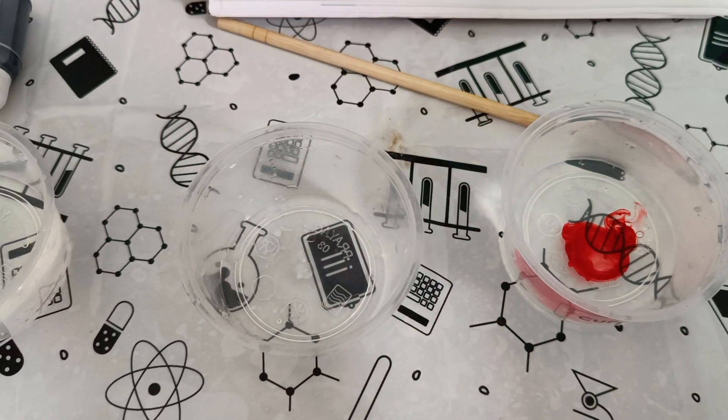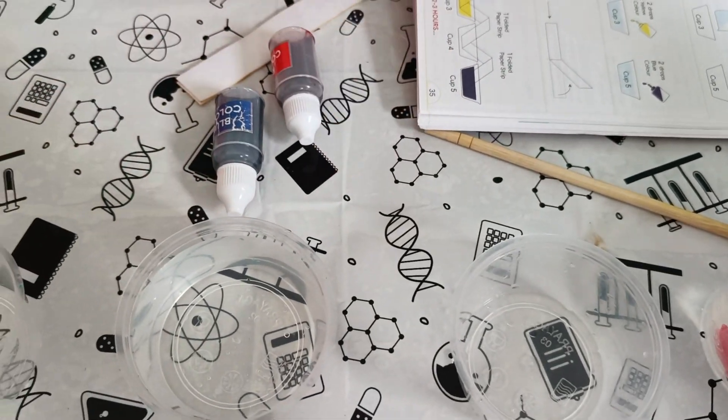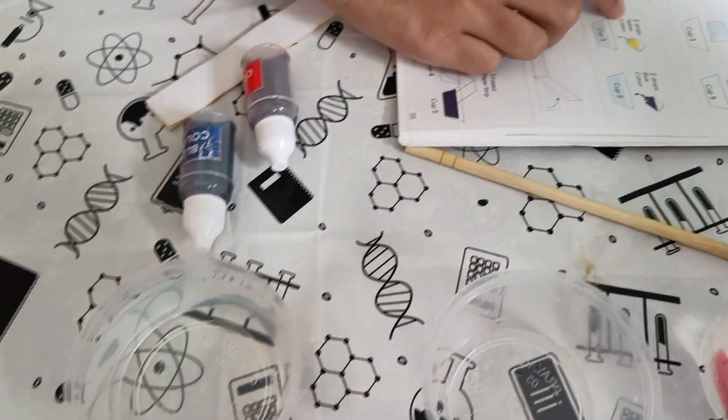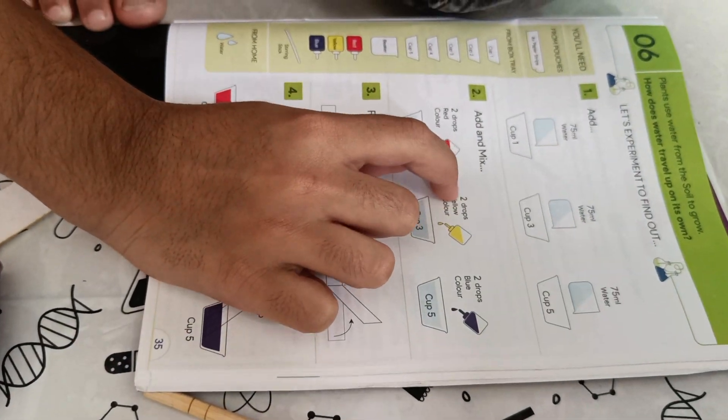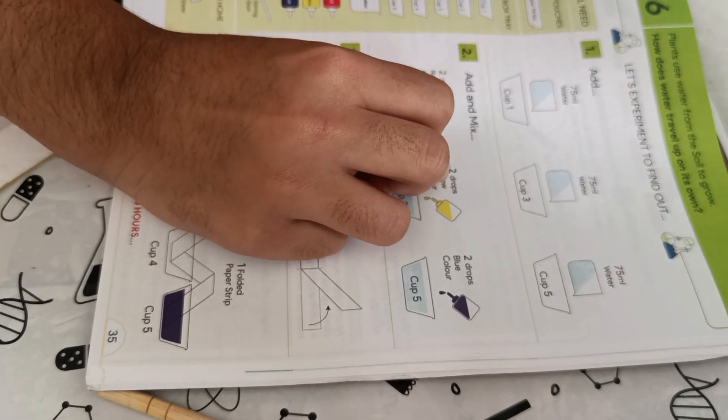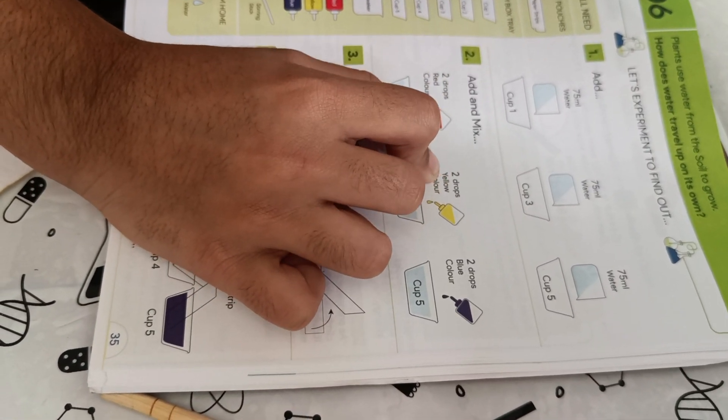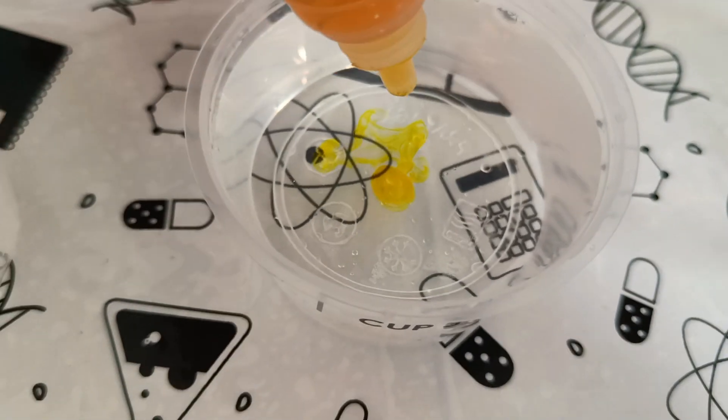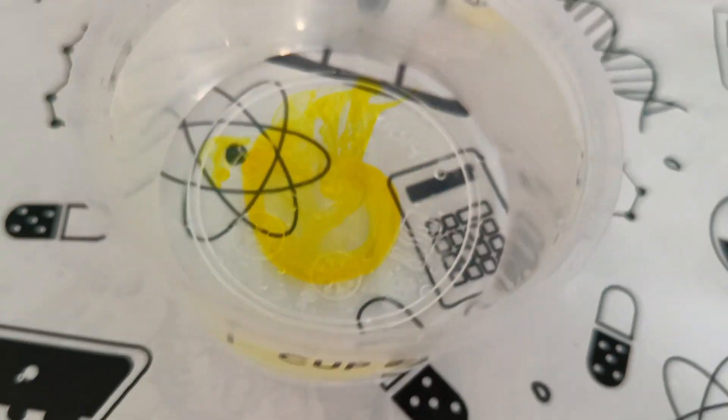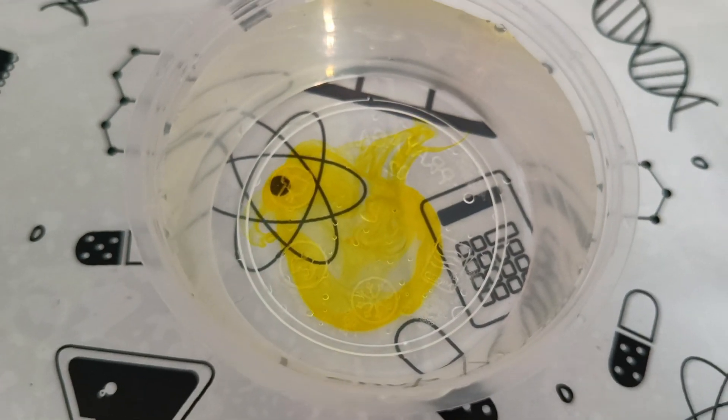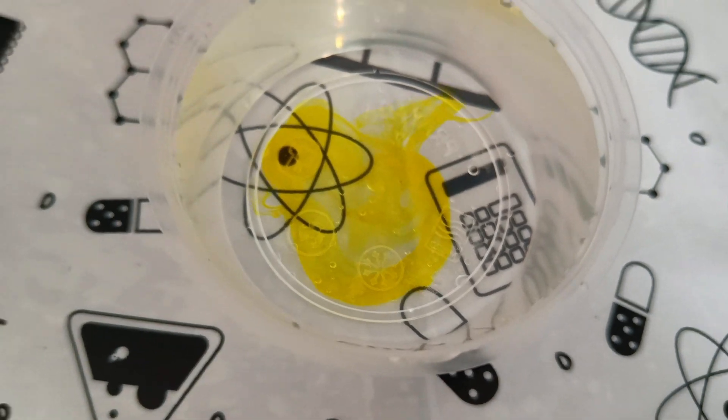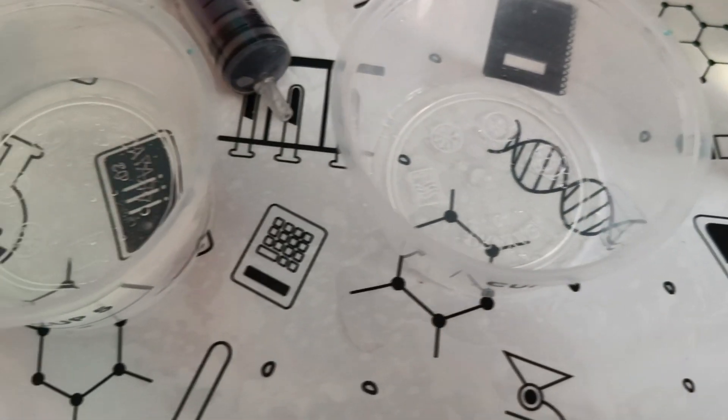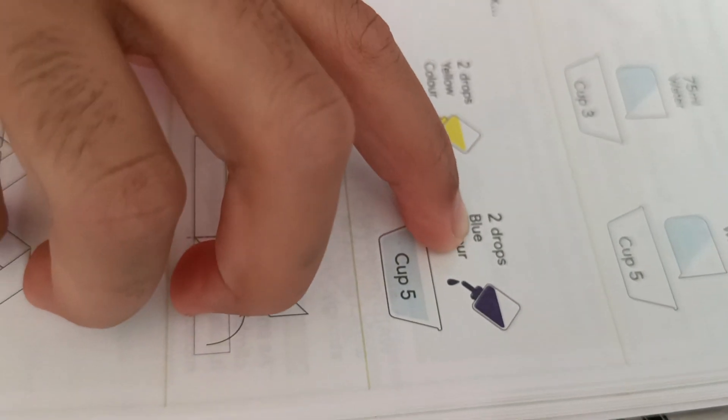There we go, we add two drops. Now in the second one, cup three, we have to add two drops of yellow color. So let us add two drops of yellow color. You could see how they are going inside at the same place.